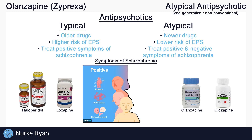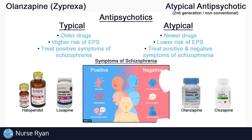Atypical antipsychotics, however, can be used in the treatment of both positive and negative symptoms. Negative symptoms being things that are taken away from regular behaviors, such as flattened affect or apathy, reduced speech, and lack of initiative.